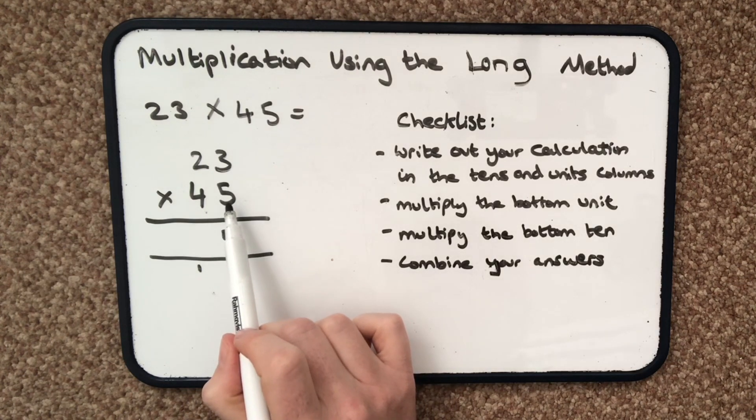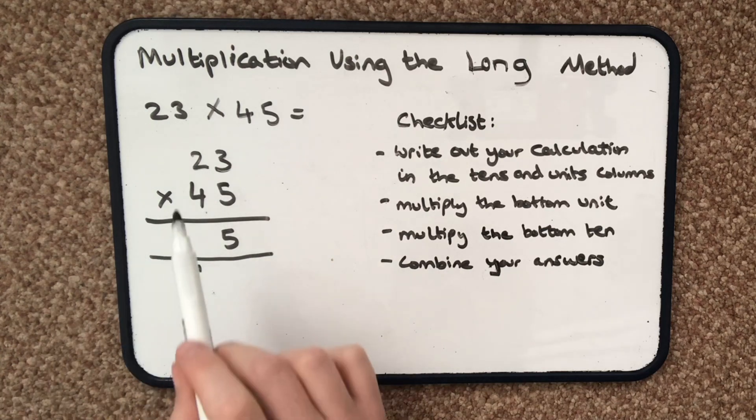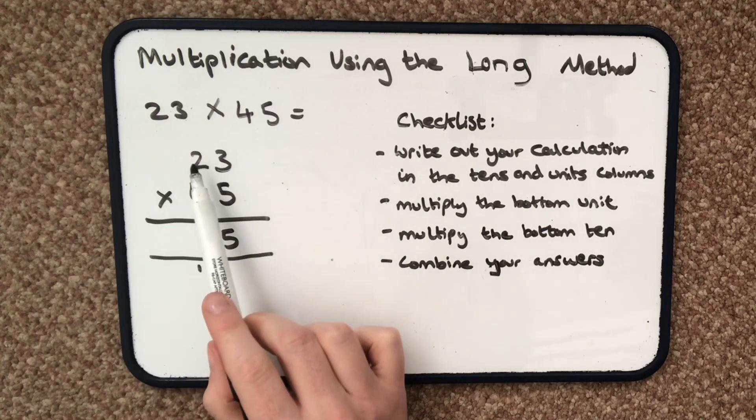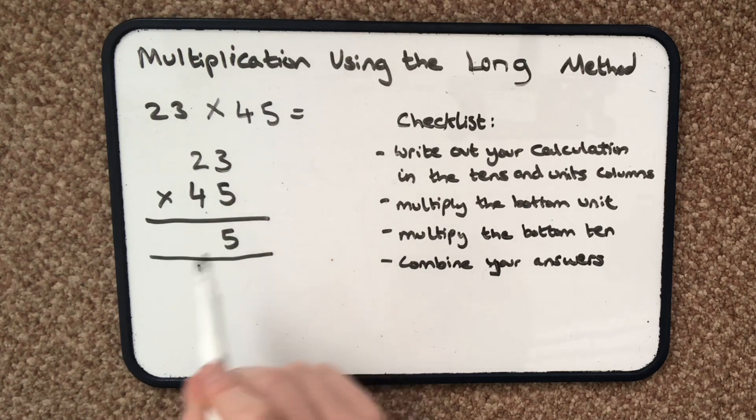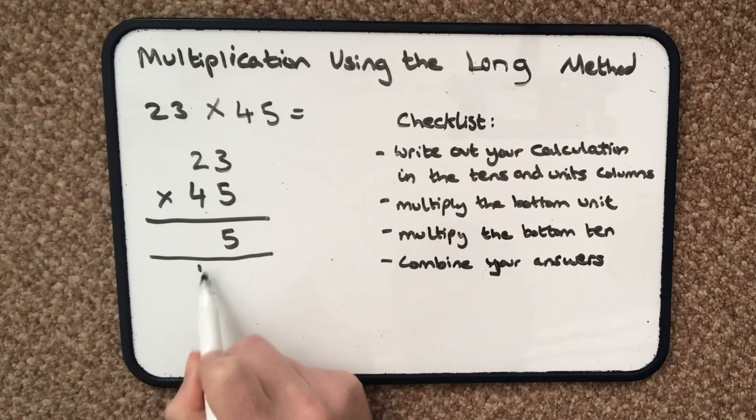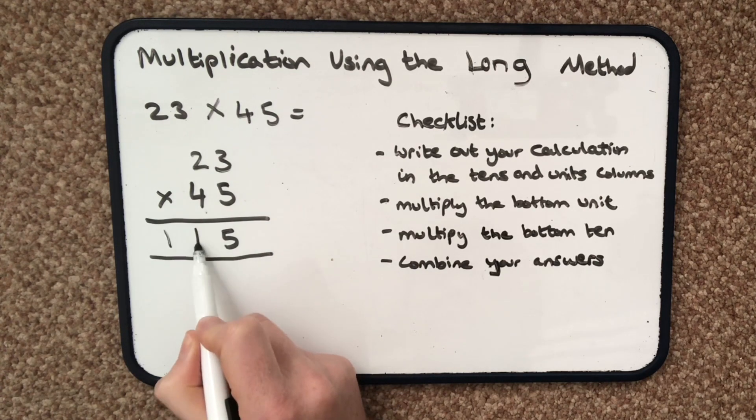Then I'm going to do 5 multiplied by 2 tens. I can just think of this as 2 times 5 and that's going to be 10. Add the extra 10 down here which is 11.